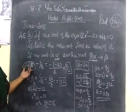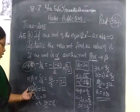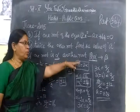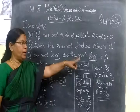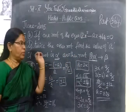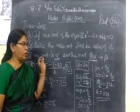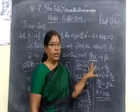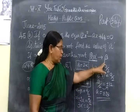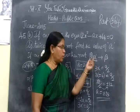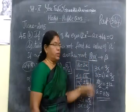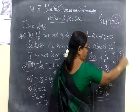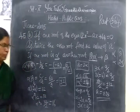So, how you are doing: sum of the root, product of the root — this is the main thing. One root is twice the other root, so beta equal to 2 alpha. One root is alpha, another root is 2 alpha. So beta equals 2 alpha. Thank you.